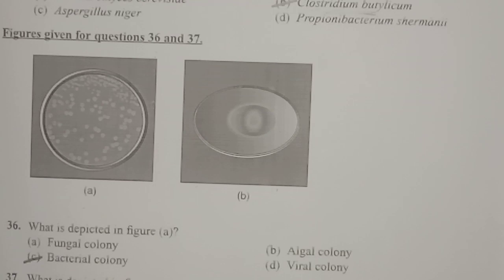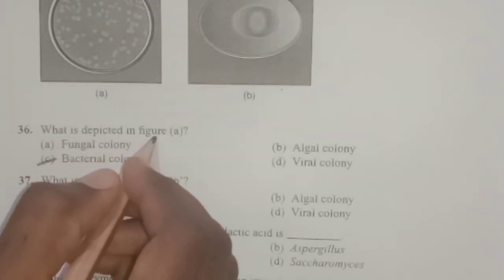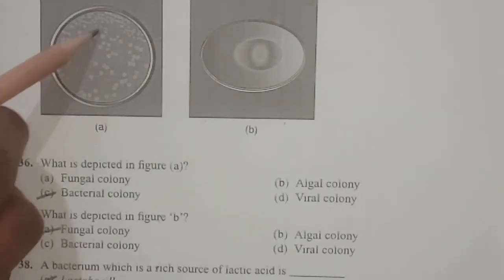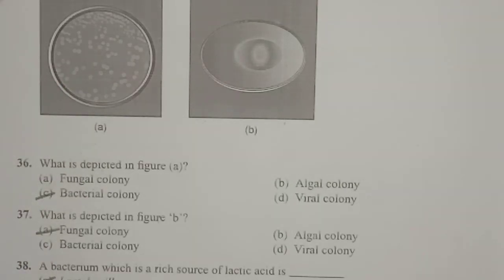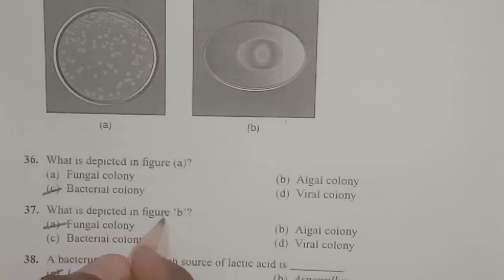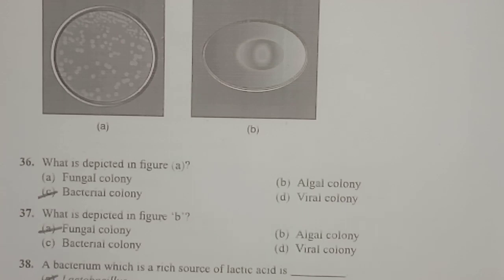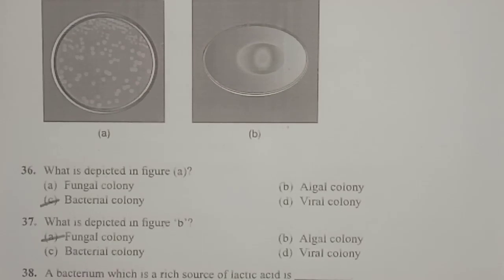The next questions are related to two images A and B. What is depicted in figure A? These are actually bacterial colonies — bacteria forming colonies in the petri plate, which can be clearly observed in image A. What is depicted in figure B? This is actually a fungal colony. Fungal colonies appear very close together and look like thread-like structures. In image A they show bacterial colonies, and in image B they show fungal colonies.